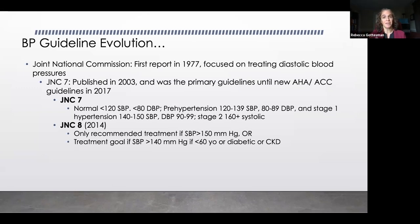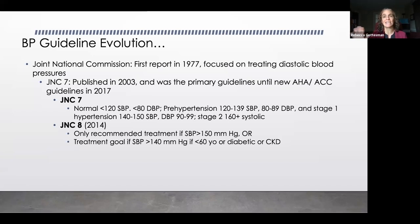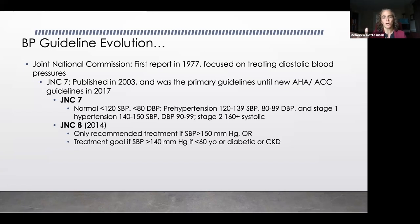JNC-7, to remind people: normal blood pressure was below 120. Pre-hypertension was in the sort of 120 to 140 systolic range. Stage 1 hypertension started at 140 systolic and diastolic of 90. If your blood pressure was above 160 systolic, you were in the stage 2 hypertension range. There was a brief period where JNC-8 came out, which was somewhat confusing given that it was more about who should get treated — really said you should only be treated if you're over 150, or a lower goal if you're diabetic or have chronic kidney disease. There was a lot of controversy about JNC-8.